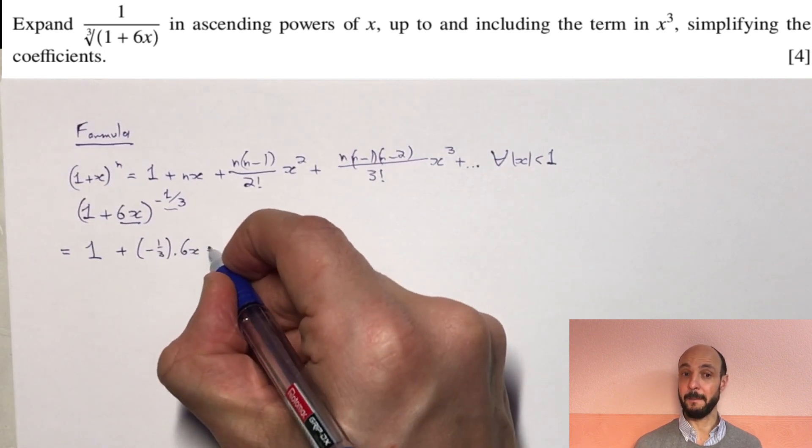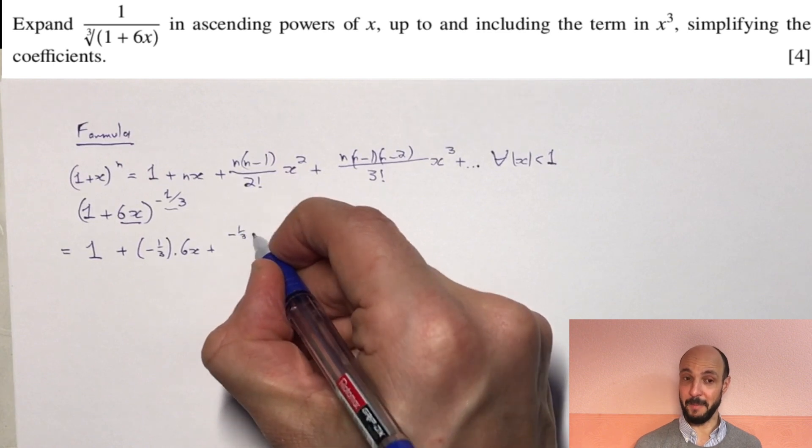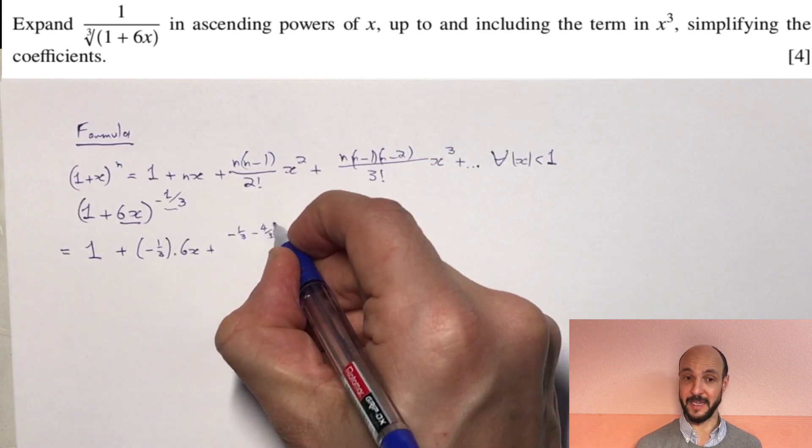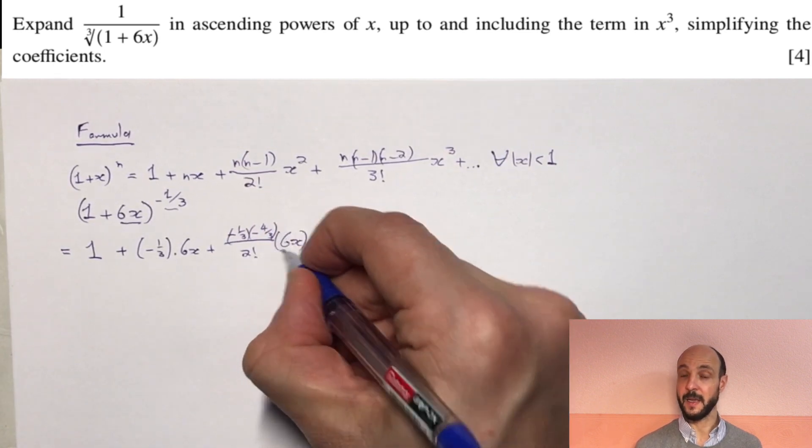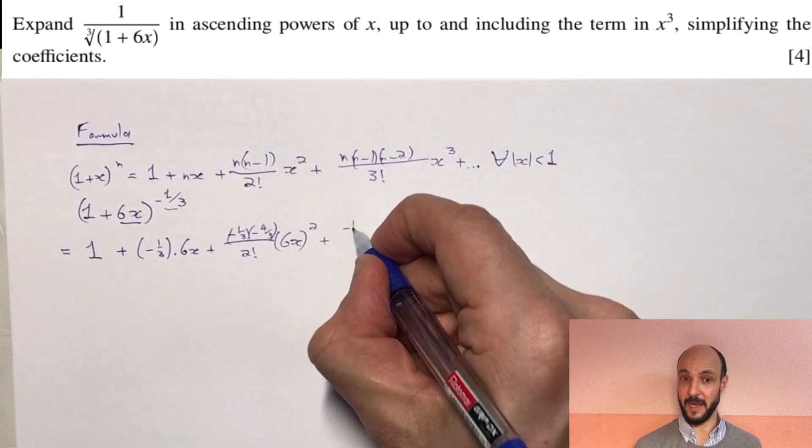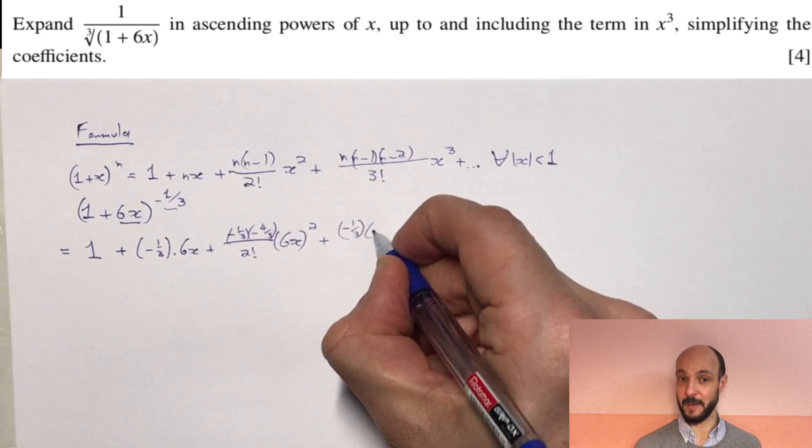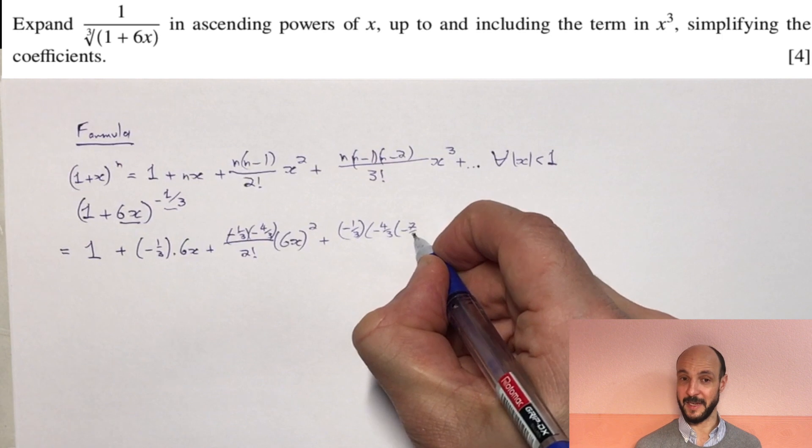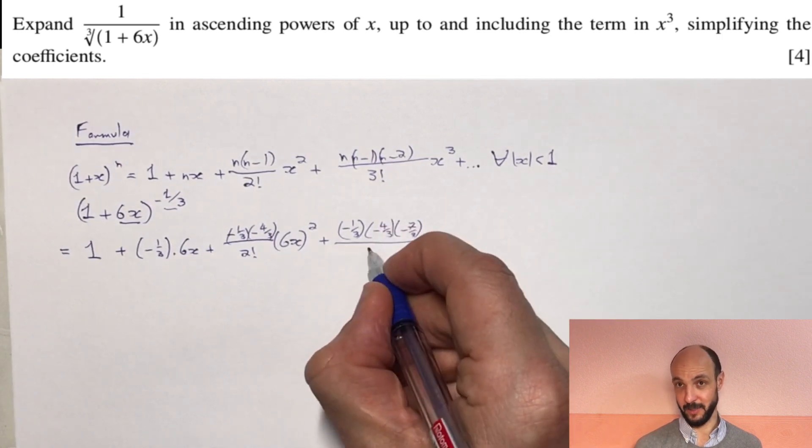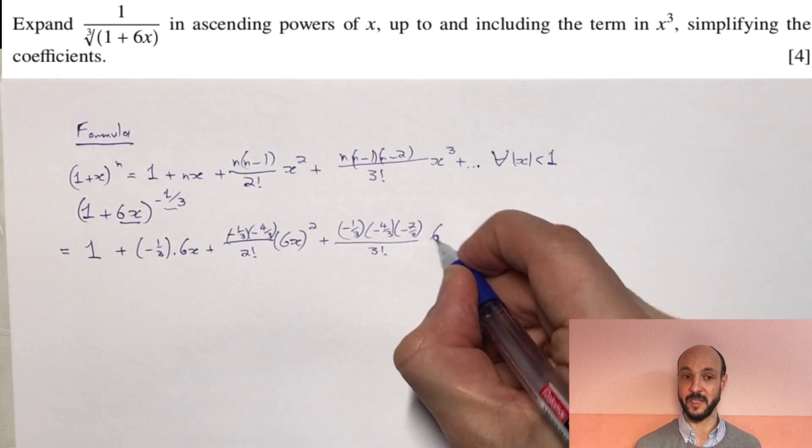plus minus 1 third times by minus 4 thirds divided by 2 factorial times by 6x all squared, plus minus 1 third times by minus 4 thirds times by minus 7 thirds divided by 3 factorial times by 6x all cubed, plus a trail of terms that we don't need for our answer.